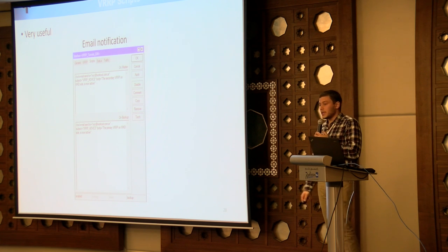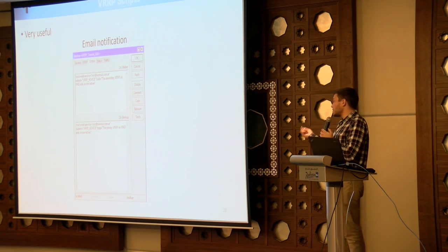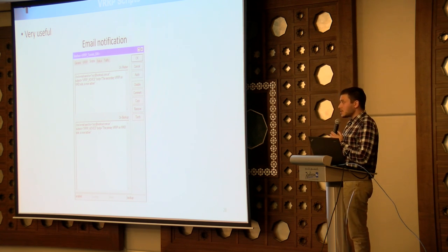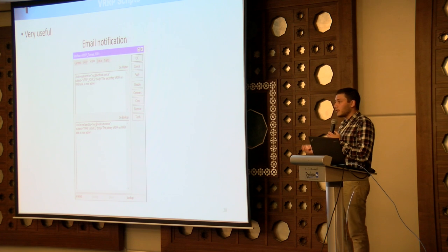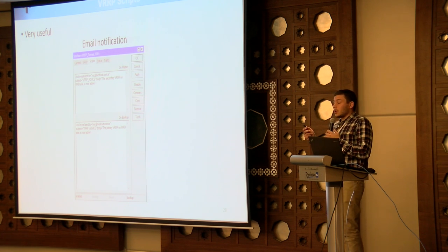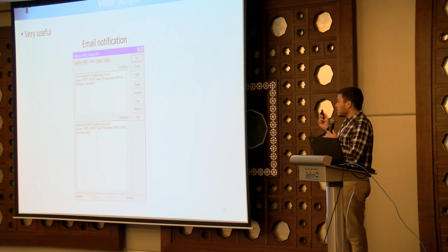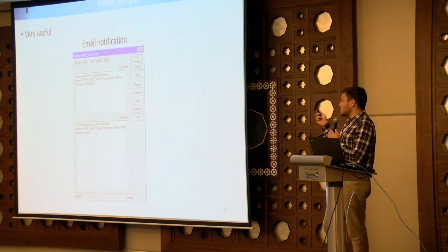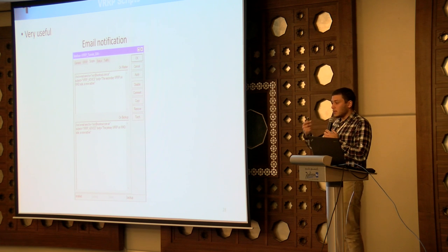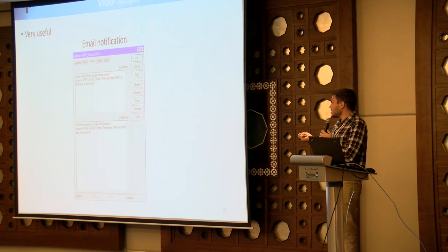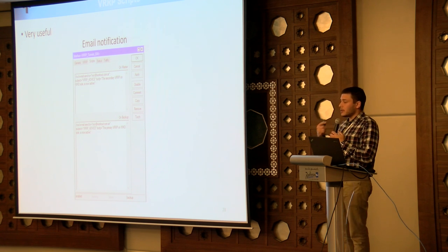A final recommendation: use the third tab of the VRRP interface — the scripts tab. This is a screenshot from the WKO wireless LAN router, which is the backup. The script sends me an email when it becomes master, saying that the secondary VRRP router on the WKO site is now active.